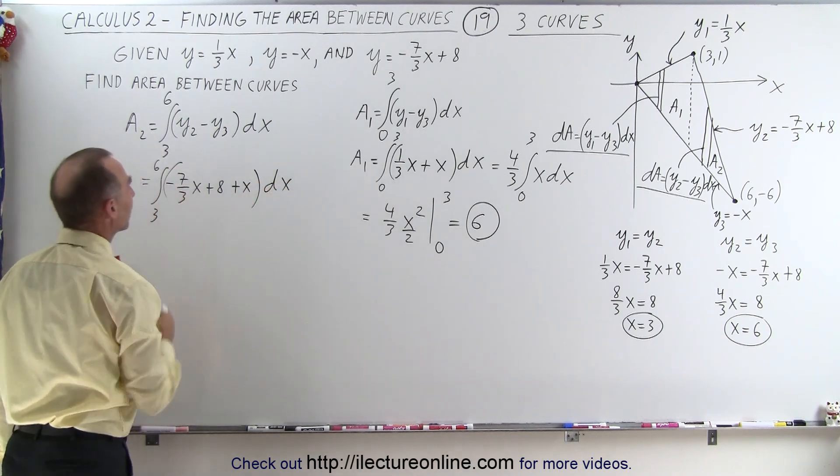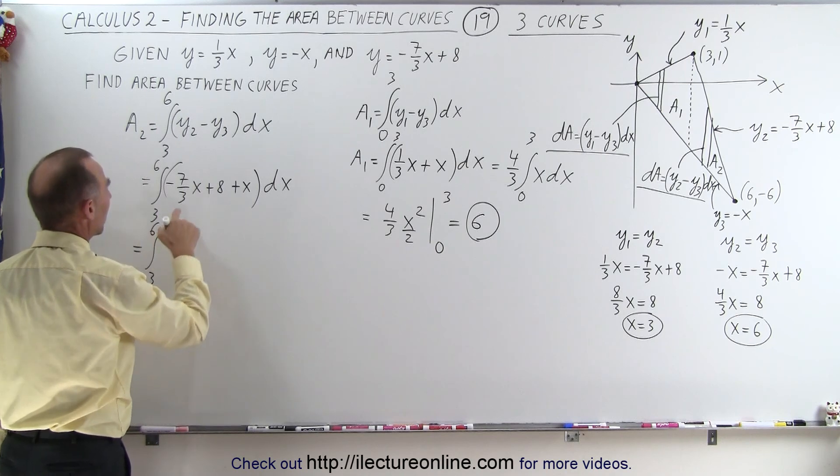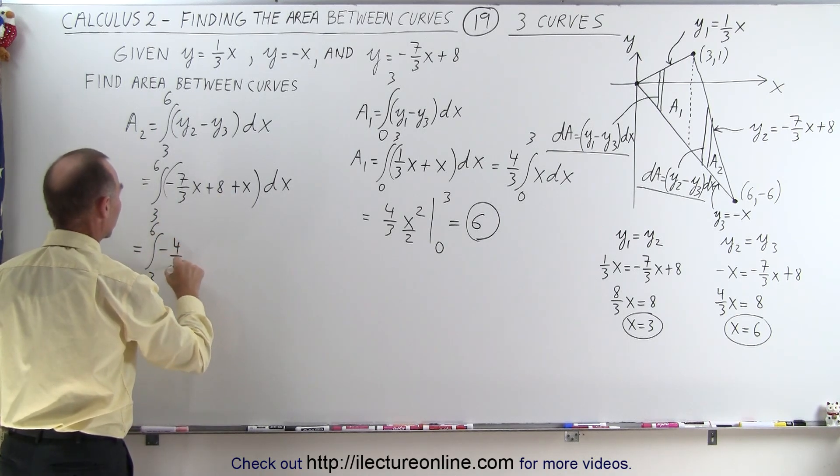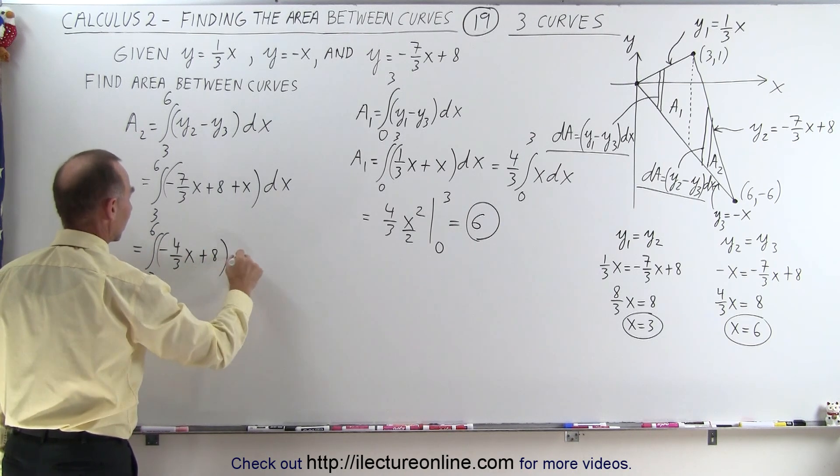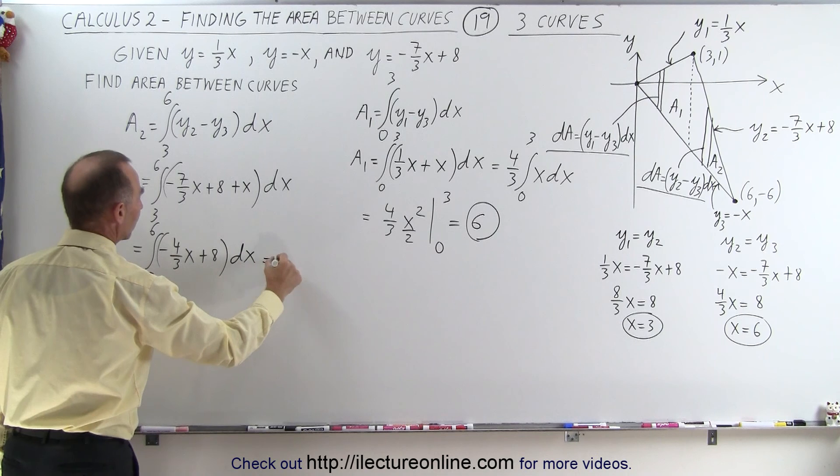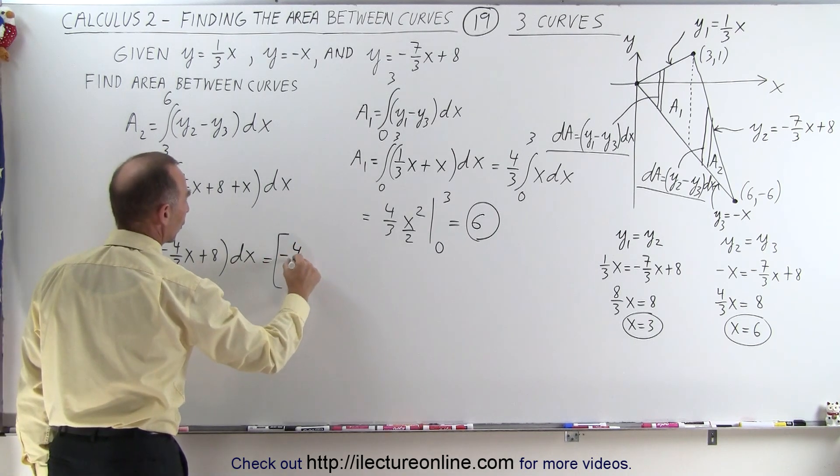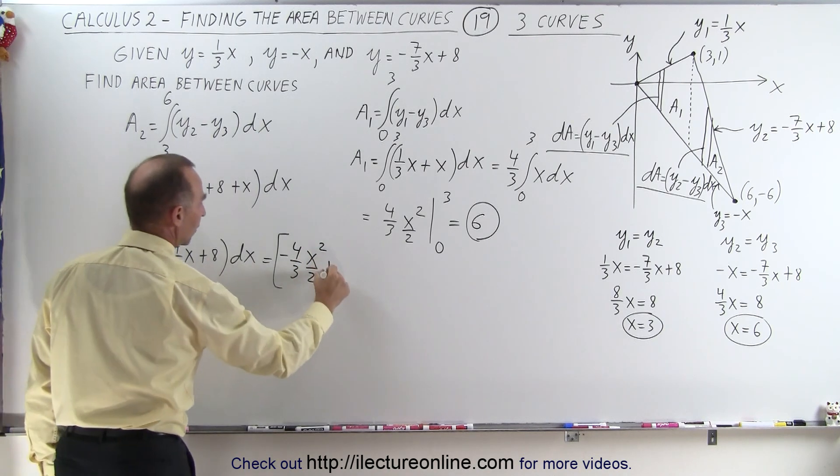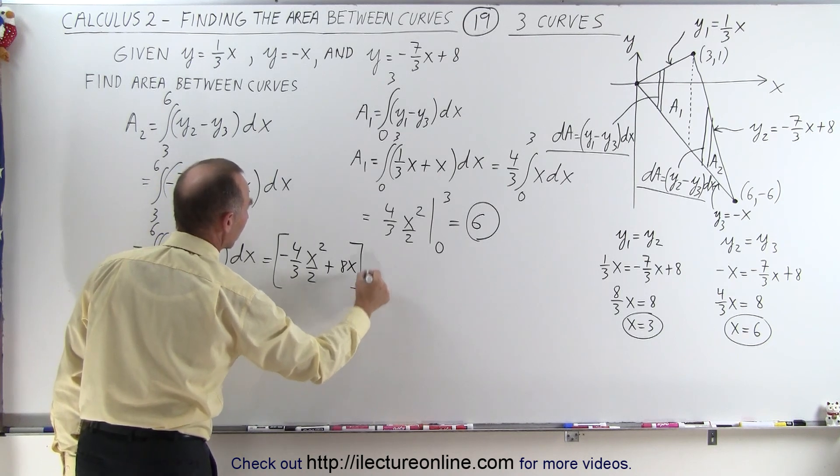We can combine like terms. So this is equal to the integral from 3 to 6, -7/3 plus 1 is -4/3, so -4/3 x plus 8 times dx. And now we can go ahead and integrate.